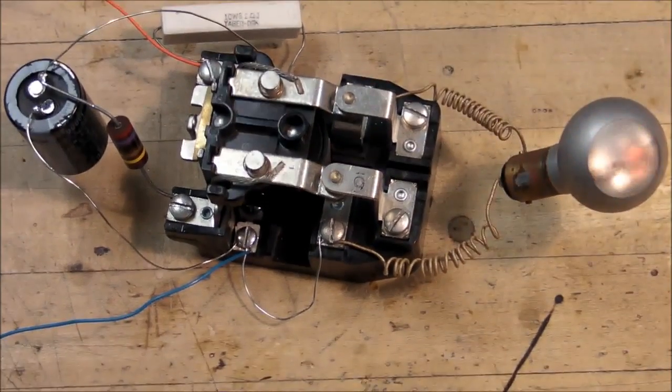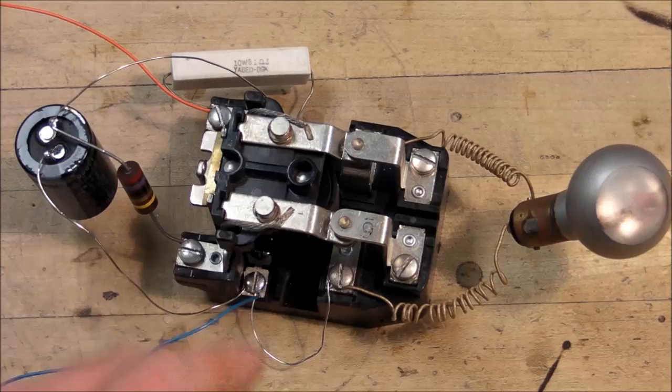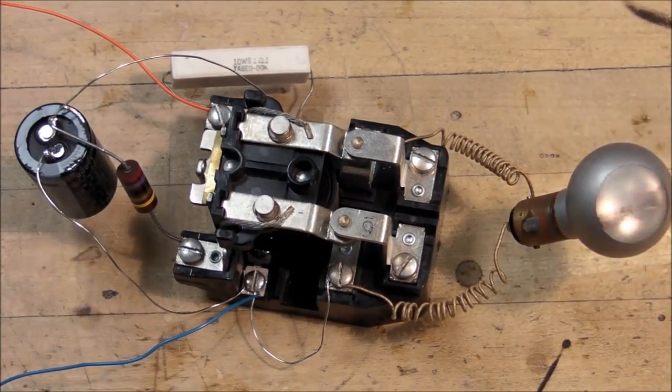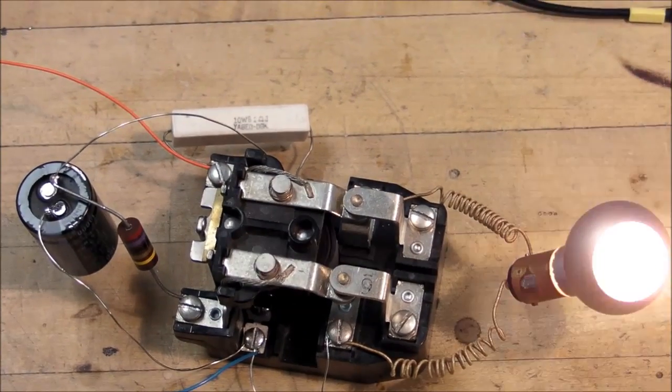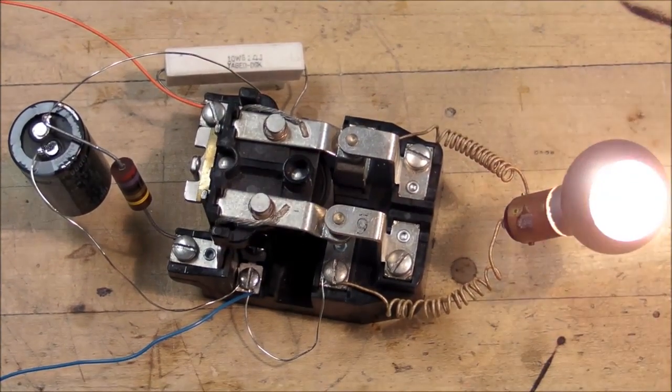I'm not sure if old cars actually use this kind of circuit. I think they had a bimetallic strip in the turn signal flasher. But I could be wrong. I'm no car mechanic.